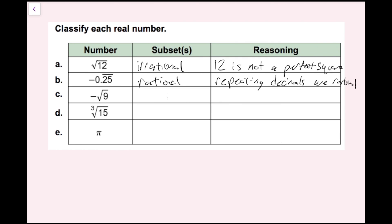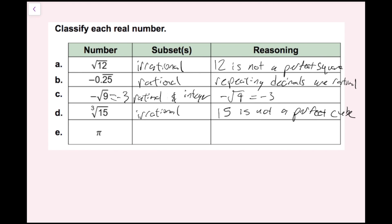For part c, we have the negative square root of 9. The negative square root of 9 is actually equal to negative 3, so not only is this a rational number, it's also an integer. For part d, we have the cube root of 15. Since 15 is not a perfect cube, this is going to be irrational. And then we have pi, which is also irrational because in decimal form, pi doesn't terminate and it doesn't repeat — it is non-repeating and non-terminating.